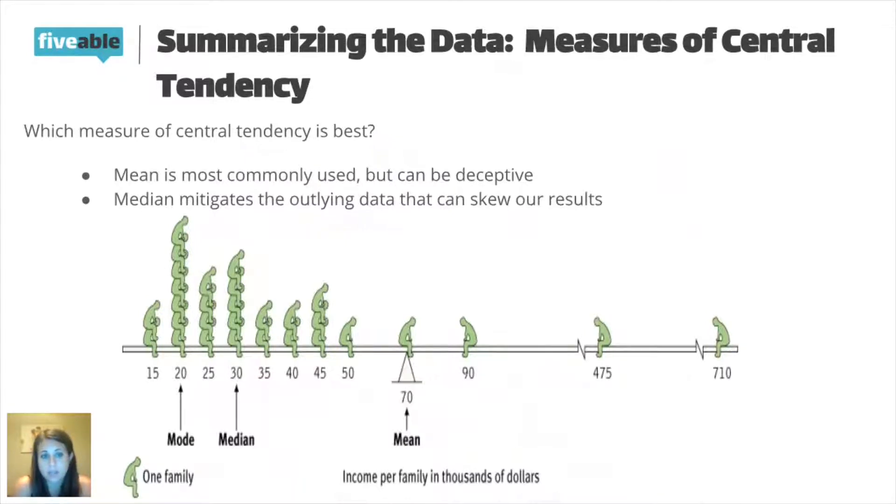Looking at this image that I have here, each of those little green people represents a family. If I asked, let's say this is my AP psychology class, and I asked all of the kids what their annual family income was—a couple families make $15,000 a year, a good amount of families make $20,000, and then we have one family way up on the right side that's making $710,000 a year. If I took all of those numbers, added them all up—15 plus 15 plus 20 plus 20 plus all the 25s, all the 30s—and I actually calculated the average, the mean is actually about $70,000.